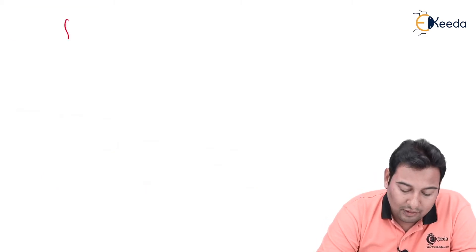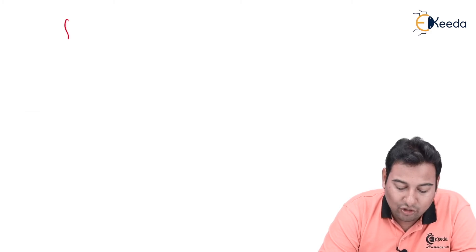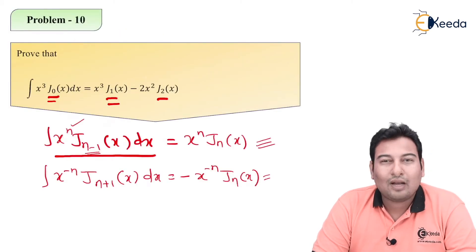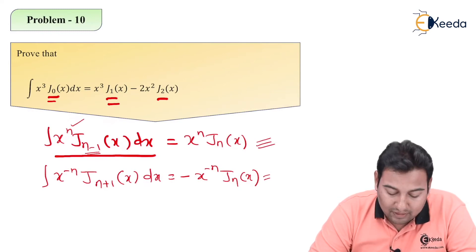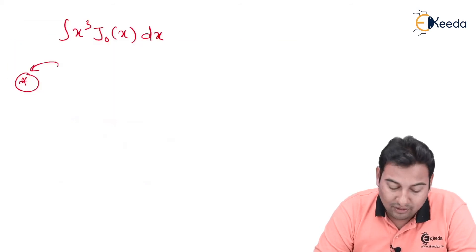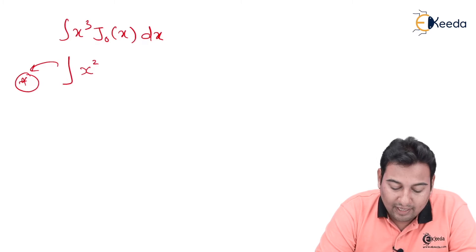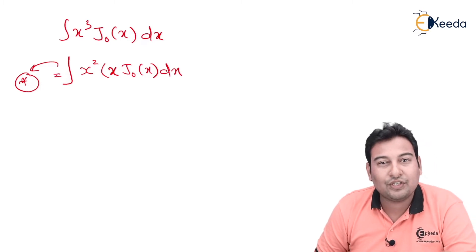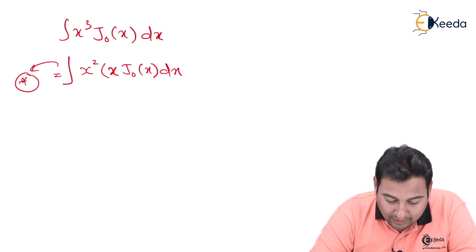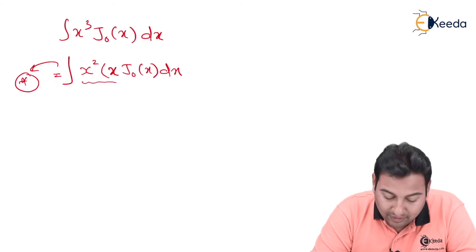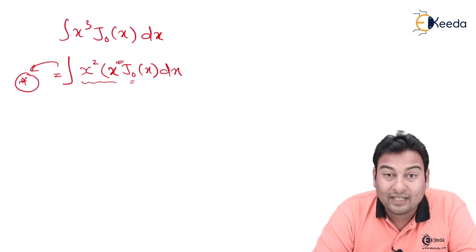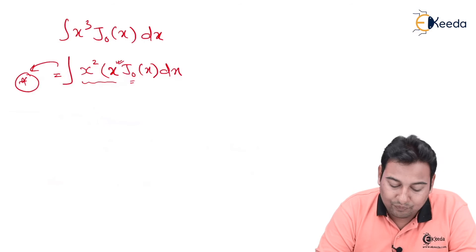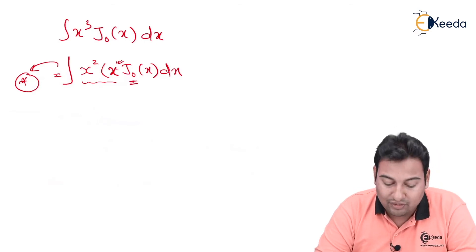Let us start with the problem: we have the integral of x³·J₀(x)dx. To apply Formula 2, remember the difference between n and n−1 is only 1. So I write this as x²·[x·J₀(x)]dx — this is the key step. Ultimately it is x³, but I split it this way because the powers here must differ by 1. We maintain the difference n−1 and n as 0 and 1, which is very important.